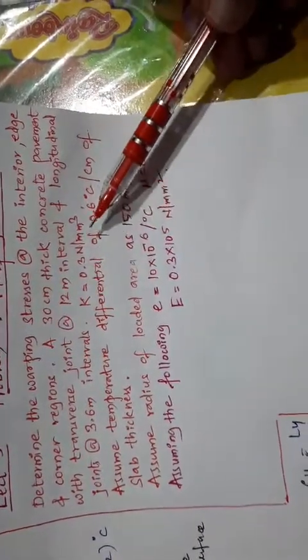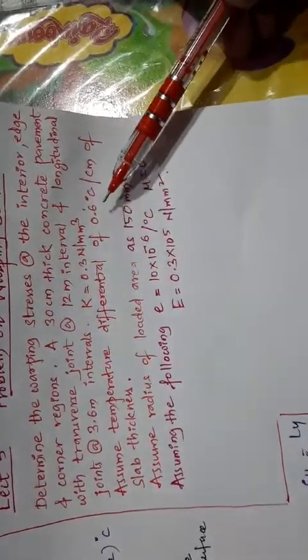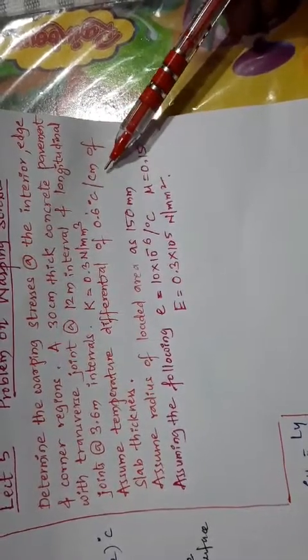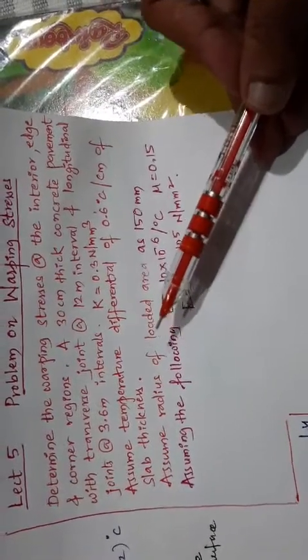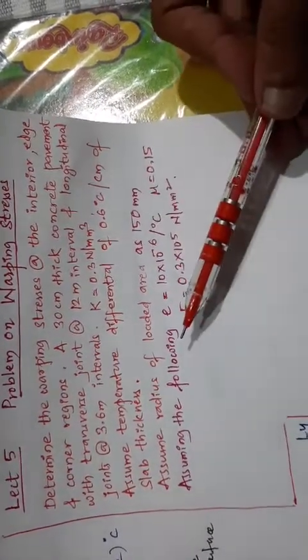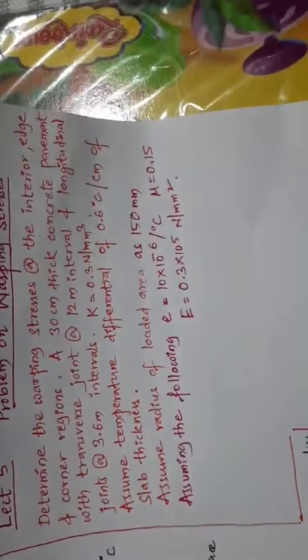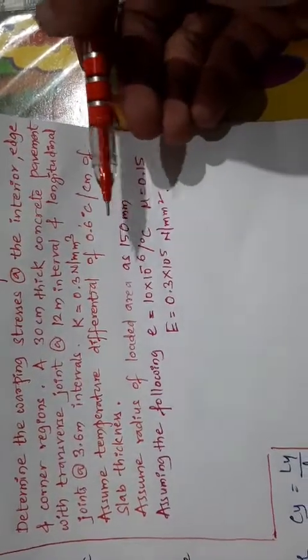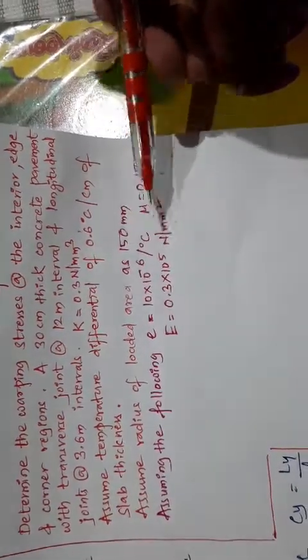Assuming temperature difference of 0.6 degrees Celsius per centimeter of slab thickness, assume radius of loaded area as 150 millimeters. The thermal coefficient of concrete per degree Celsius is given as 10 into 10 raised to minus 6 per degree Celsius.